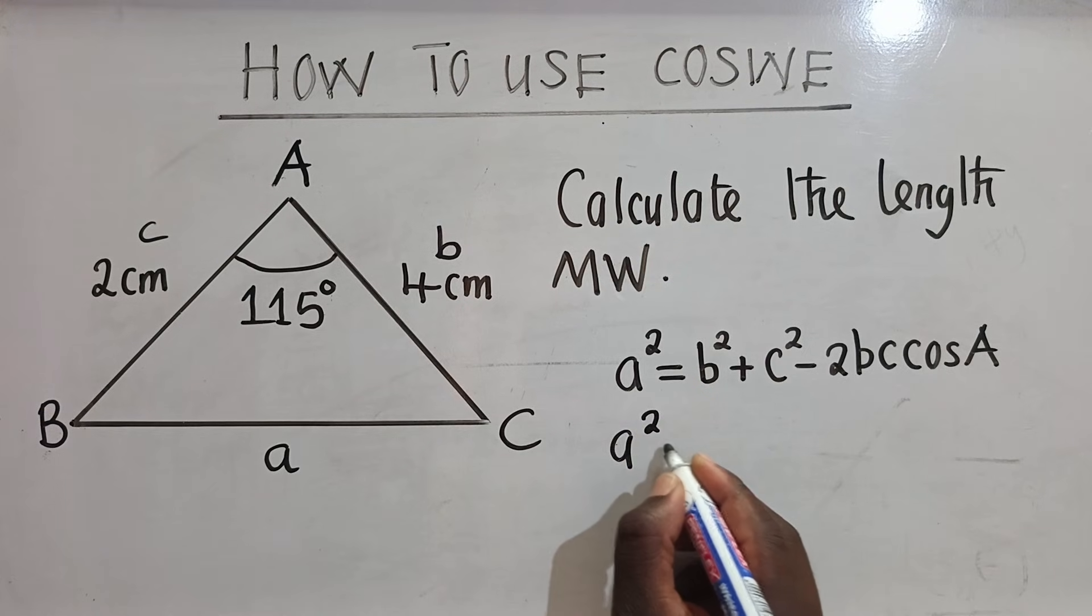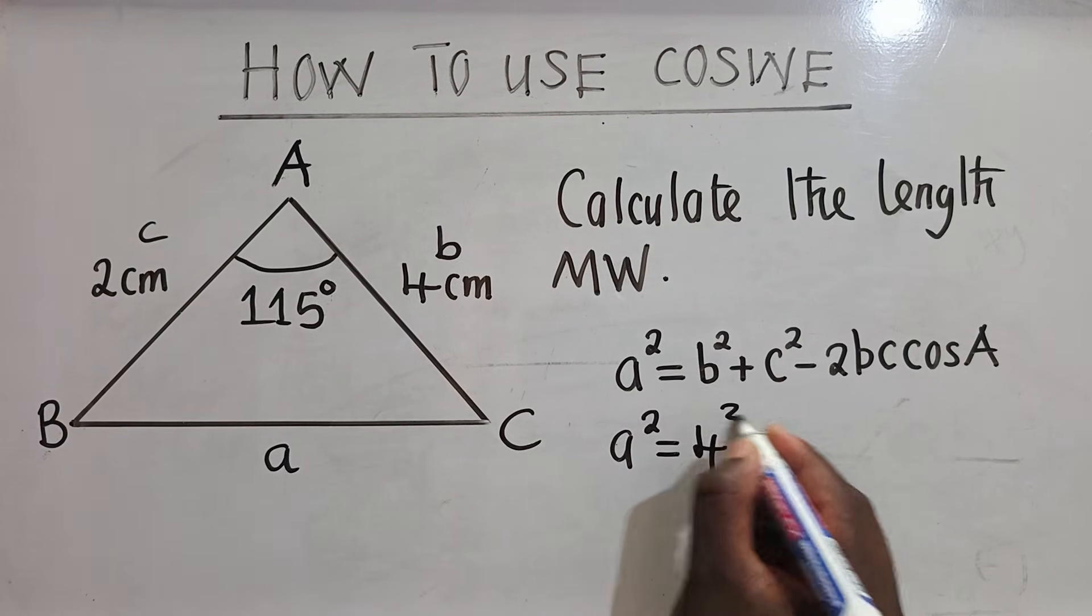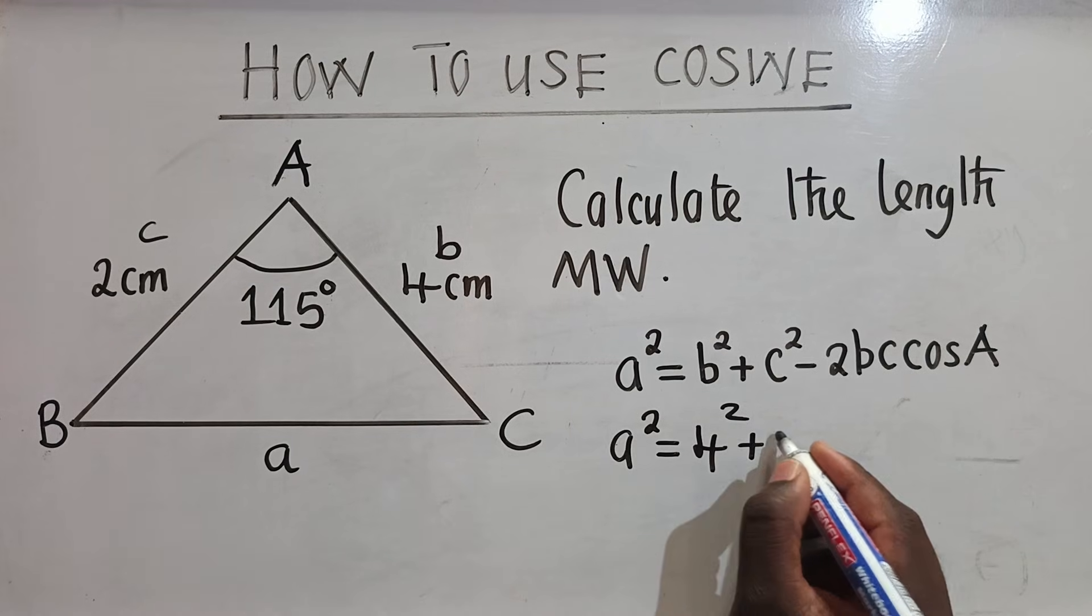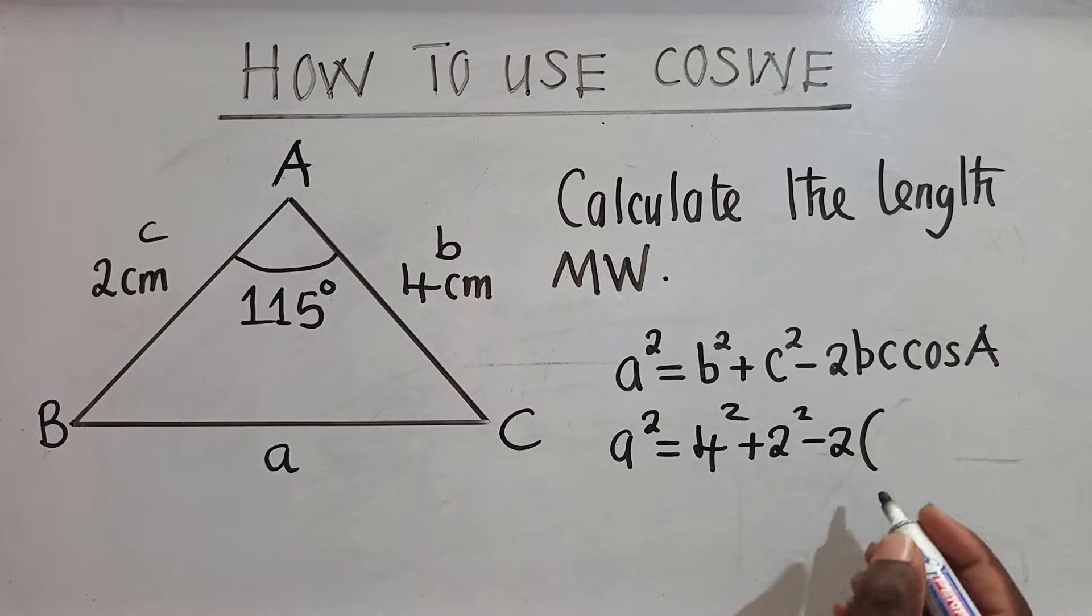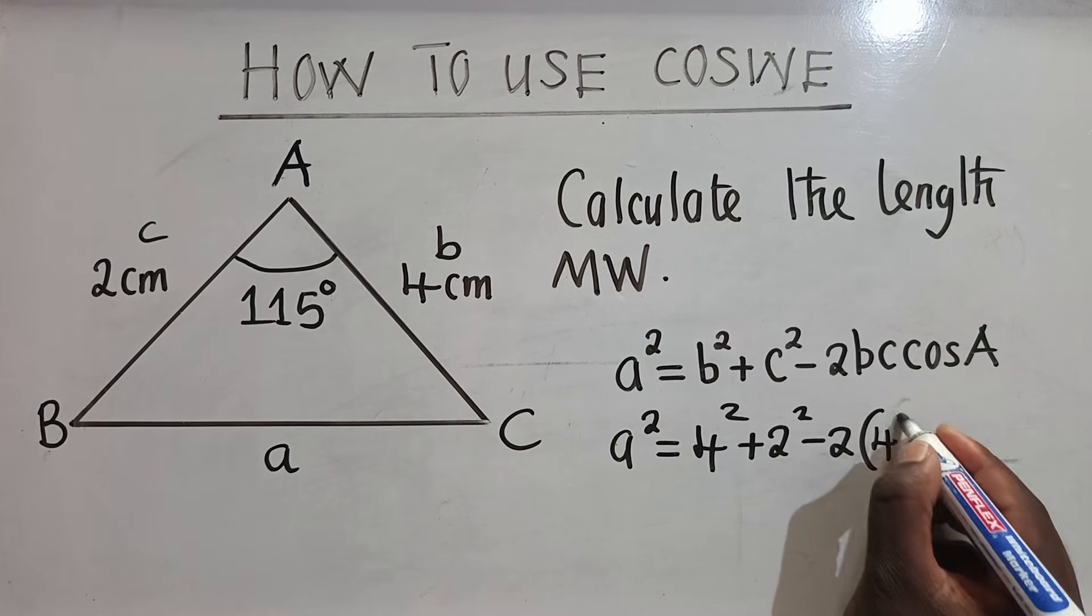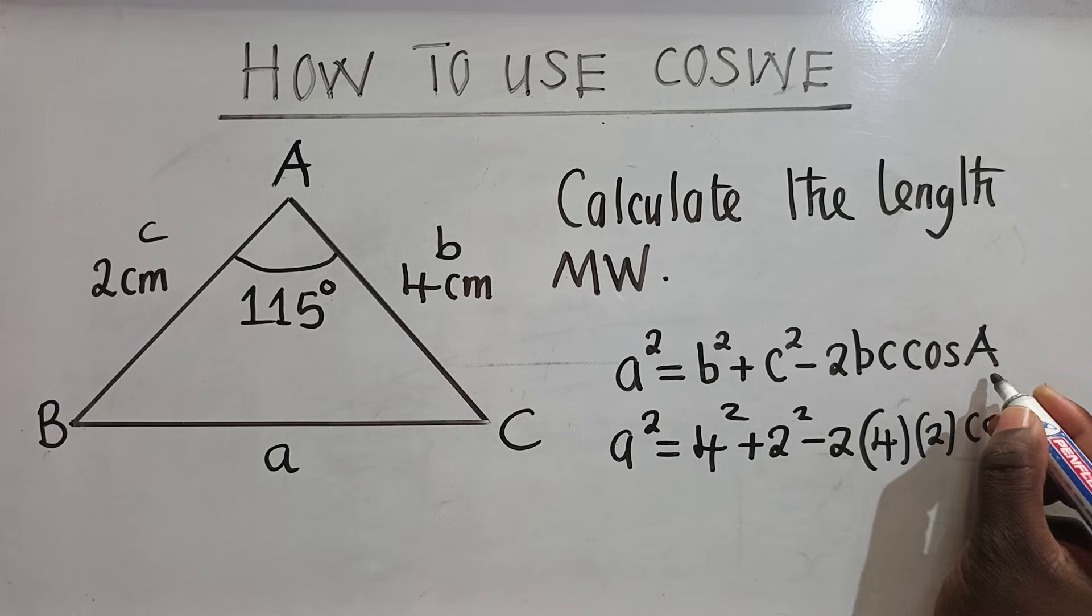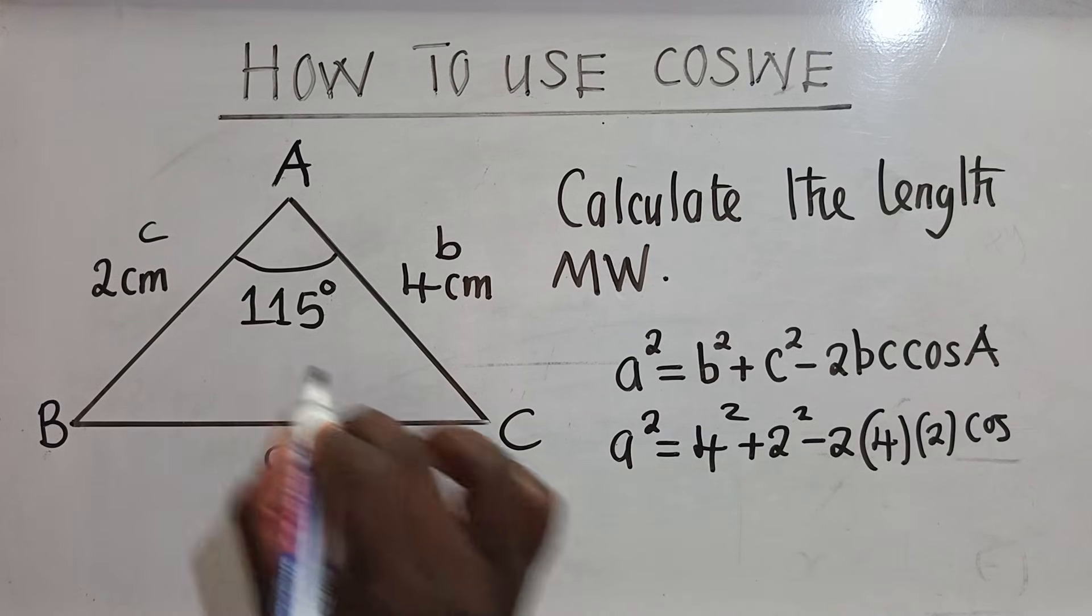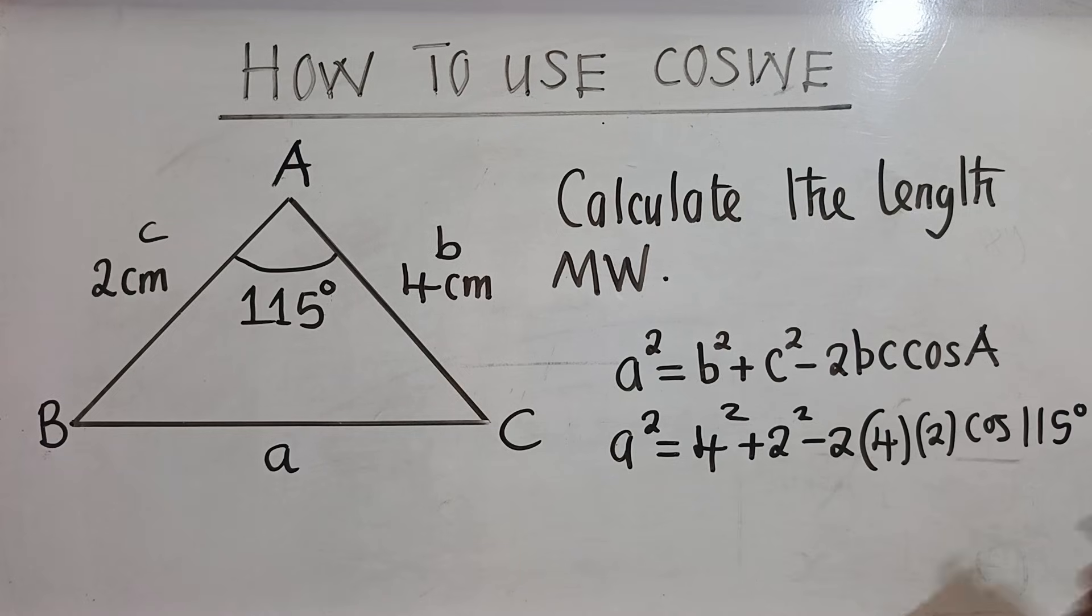We shall say small letter a² is equal to b is 4², c is 2² minus 2, b is 4 there, c is 2, and then you say cos capital letter here is the angle, which is right here. And that is 115 degrees.